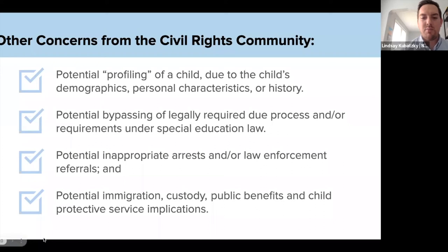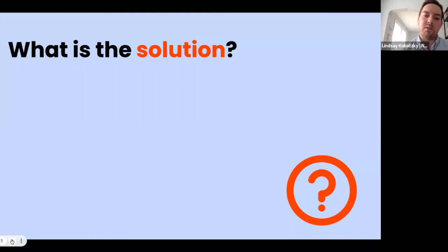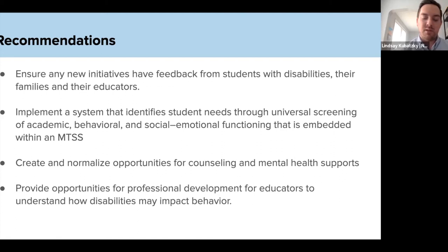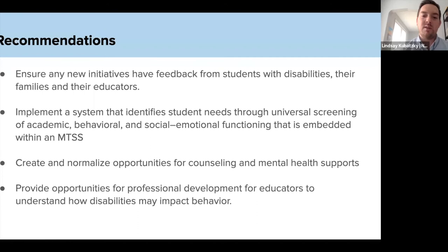There are a few things we can do to mitigate some of those concerns. The first thing is to include students with disabilities, their families, and their educators in any new initiative we are creating. The people who know what some of these risks are are students with disabilities themselves — they are experts on their behavior and what might be perceived as a potential threat. It's really important to get feedback from the community we're seeking to protect, meaning an ongoing relationship with students with disabilities, their families, and educators as we implement any school safety initiative.